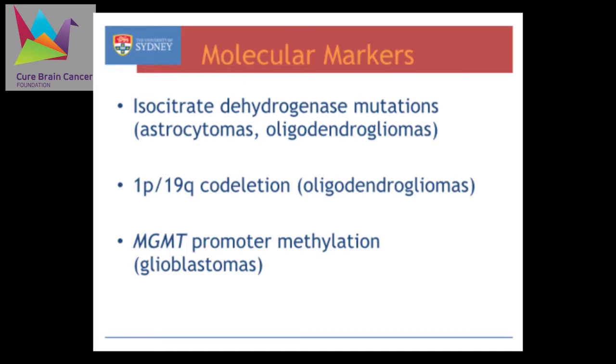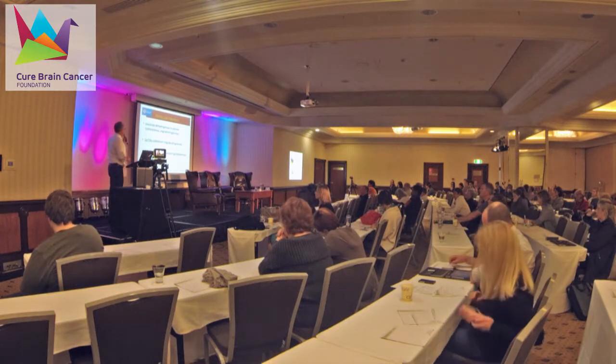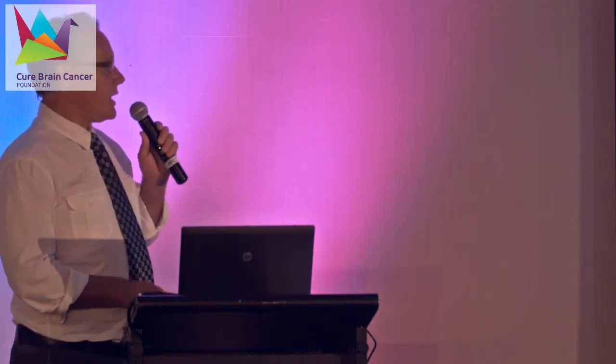That's really the routine histopathology of brain tumours. I'm going to briefly touch on three molecular markers that are finding their way into pathology labs in Australia and are sometimes useful to pathologists and sometimes to oncologists. I'll talk about isocitrate dehydrogenase mutations, which are particularly relevant in grade two and three astrocytomas and oligodendrogliomas; 1p19q co-deletion, which is particularly relevant to oligodendroglioma; and MGMT promoter methylation, which is particularly relevant to glioblastoma.